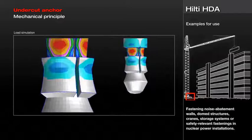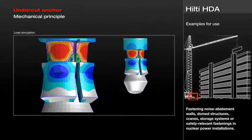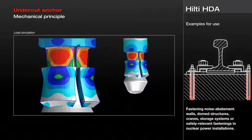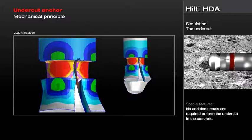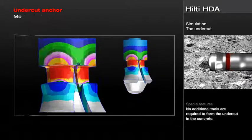The uniqueness of the anchor is based in its self-undercutting quality. When being set, specially designed segments move over the cone of the anchor and form the undercut in the concrete. Undercutting and expansion no longer need to be completed with a special tool, saving time and effort, and the drilled hole and anchor are a perfect match.